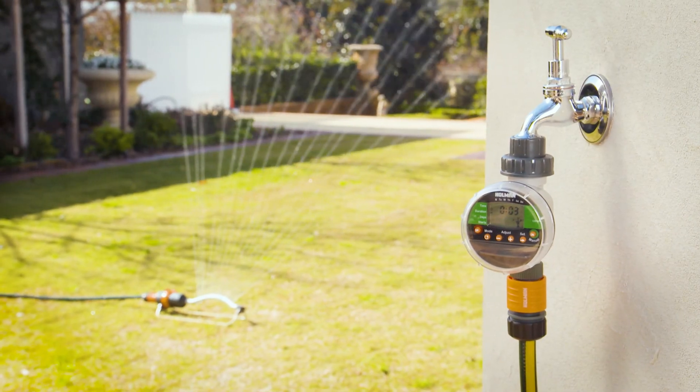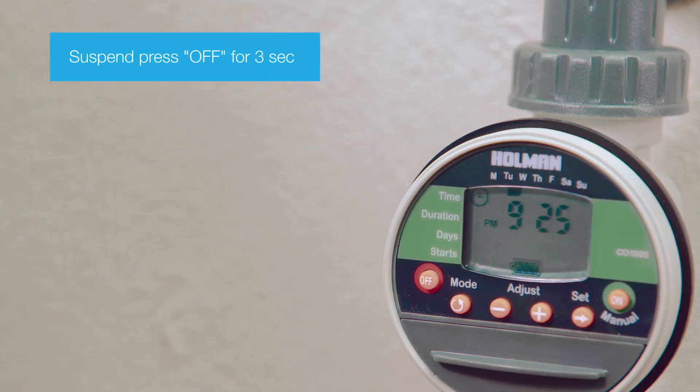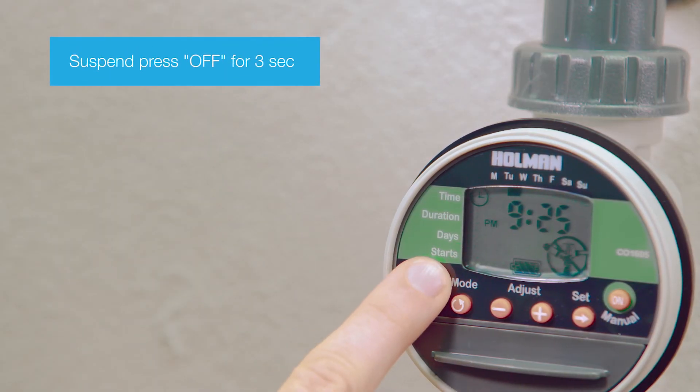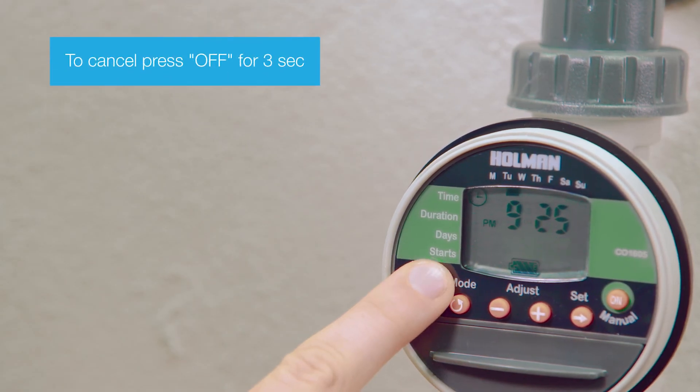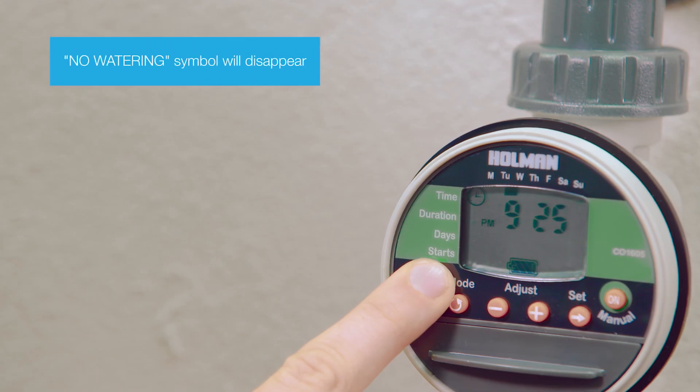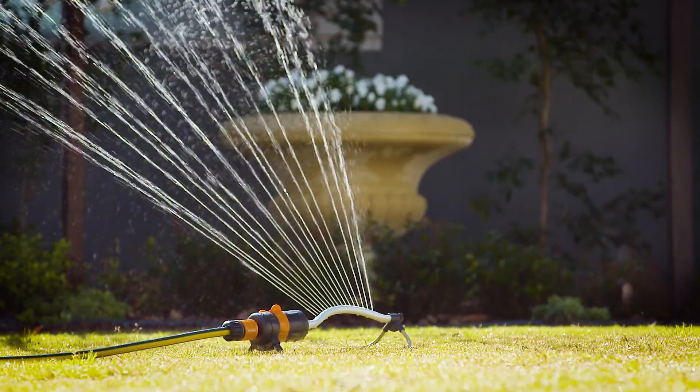The timer can also be suspended for winter or rainy days. To suspend, press and hold off for three seconds until the watering symbol appears. To cancel the suspension, hold off until the water symbol disappears. All programs will resume when suspension is cancelled.